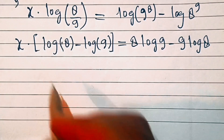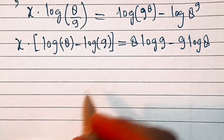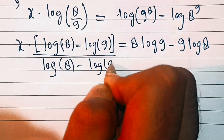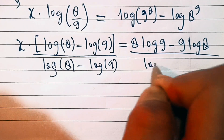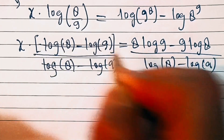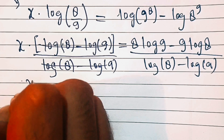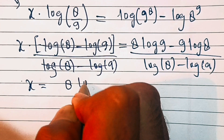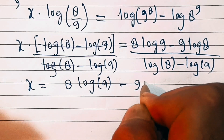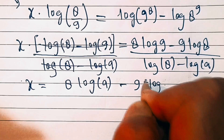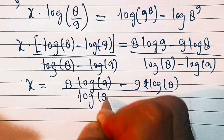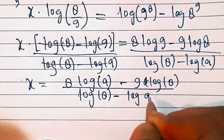Now we will divide both sides by (log 8 minus log 9). This and this will get cancelled out. So we have x equal to (8 times log 9 minus 9 times log 8) divided by (log 8 minus log 9).